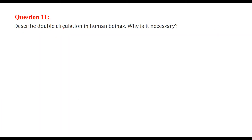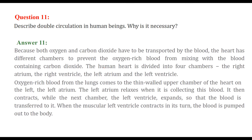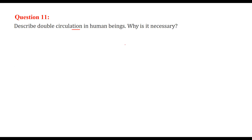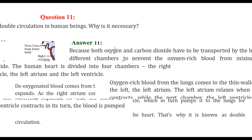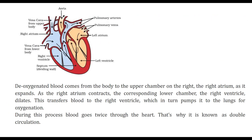Describe double circulation in human beings — why is it necessary? This is all due to the heart we possess. The heart has a special formation and is divided into 4 parts: the right atrium, the right ventricle, the left atrium, and the left ventricle.